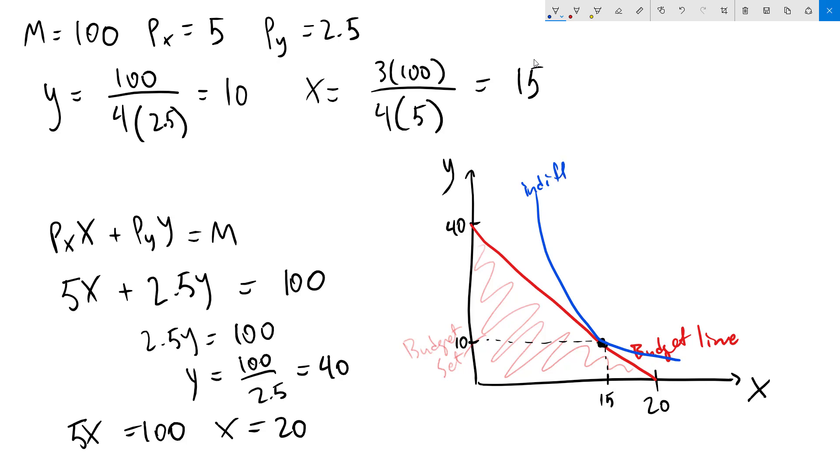To finish this off, let's figure out exactly which indifference curve we are on. For that, we need to figure out exactly how much utility our consumer is getting. So we can plug in our numbers into the utility function. We have 15x and 10y. So we have 15 to the 3 fourths times 10 to the 1 fourth. Plug that into my calculator and get 13.55.